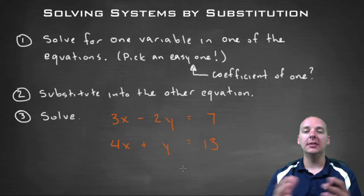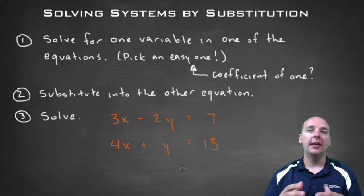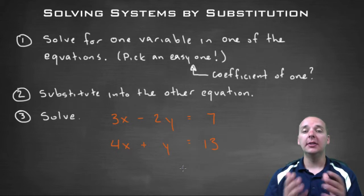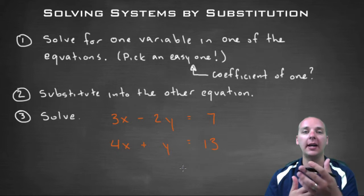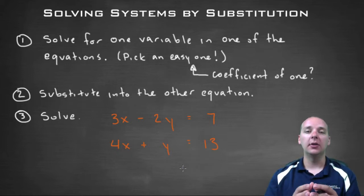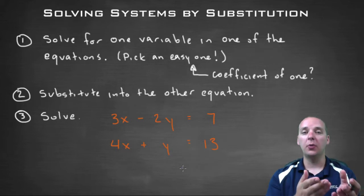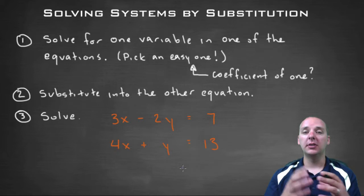But I would recommend trying to pick an easy one. If any of your variables have a coefficient of one, the algebra turns out to be really easy to solve for that guy because you don't have any coefficient to divide out at the end. If you had like a 4y, at some point you'd have to divide by four and get a bunch of fractions. So if any of your variables have a coefficient of one, go for that one.